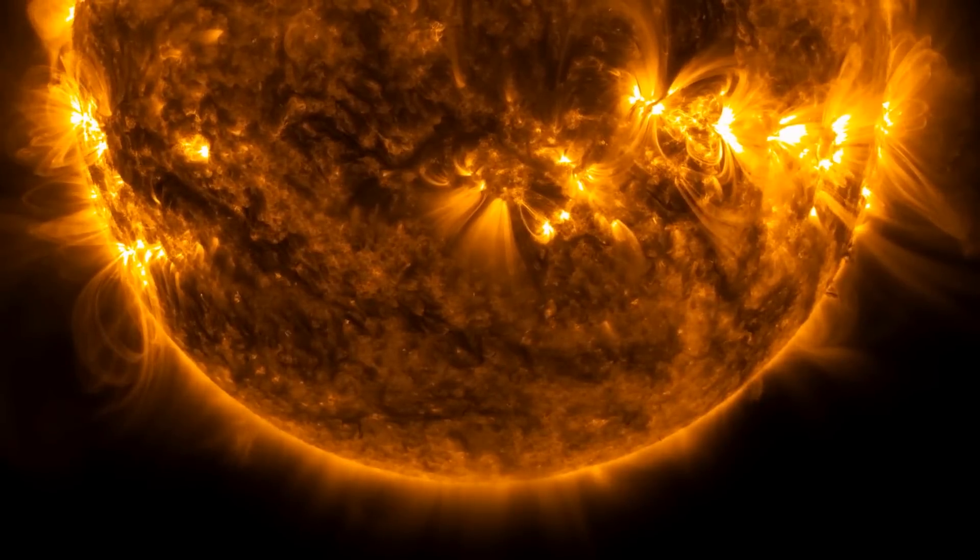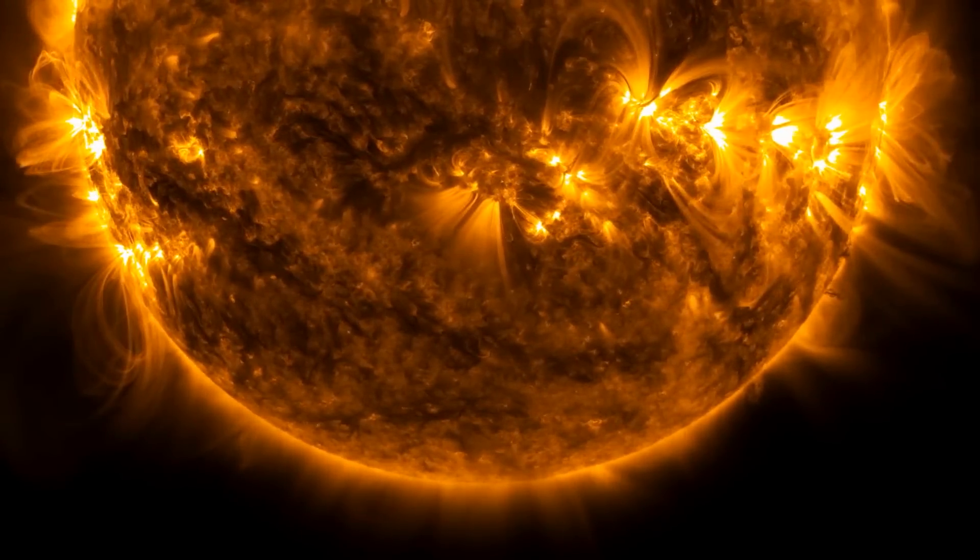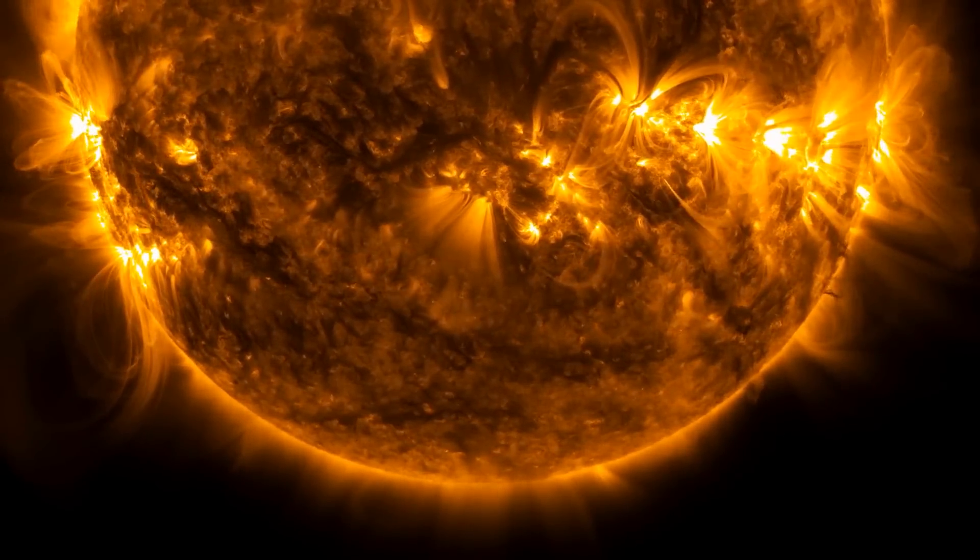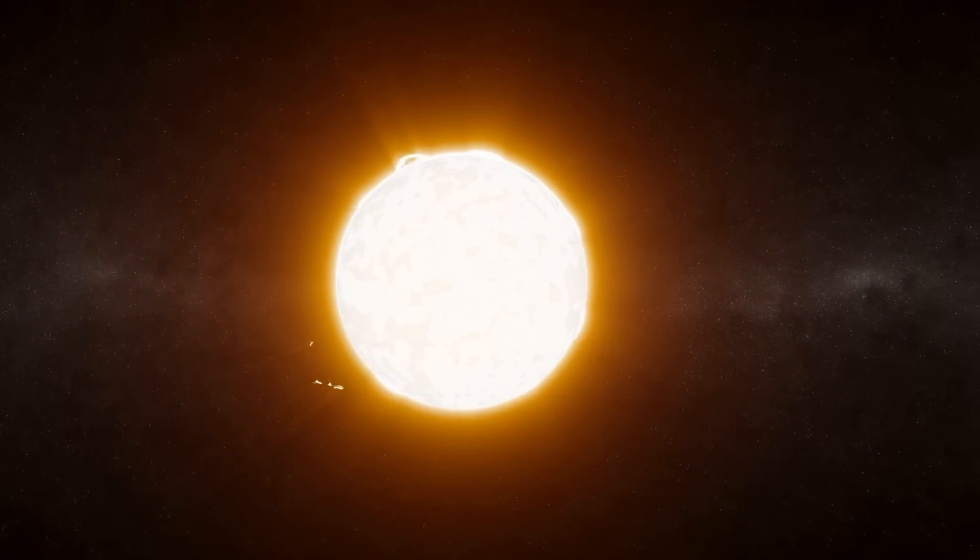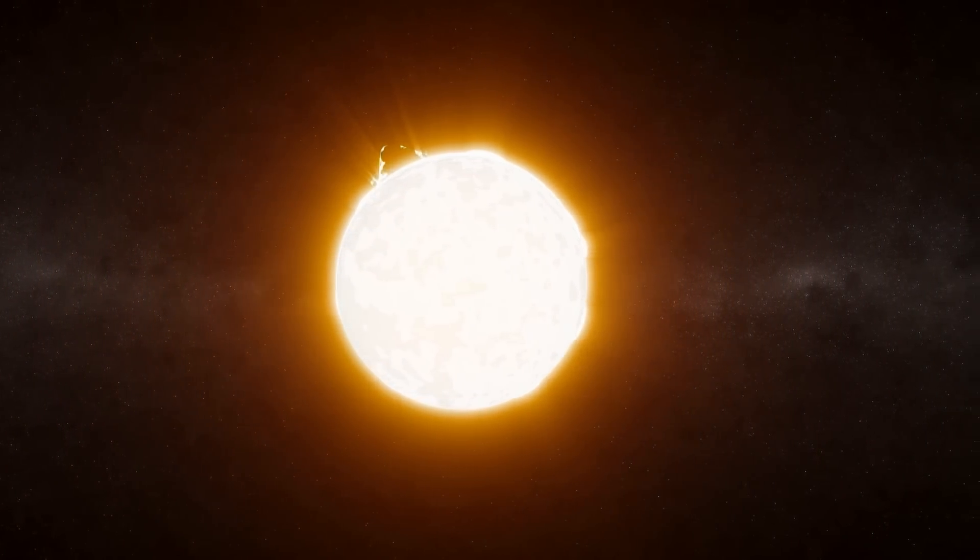HD 139139 is located about 350 light-years from Earth in the constellation Libra. The star, which is slightly larger and brighter than our sun, is a Type G main-sequence star and is also listed in some star registers under the name EPIC 249706694.